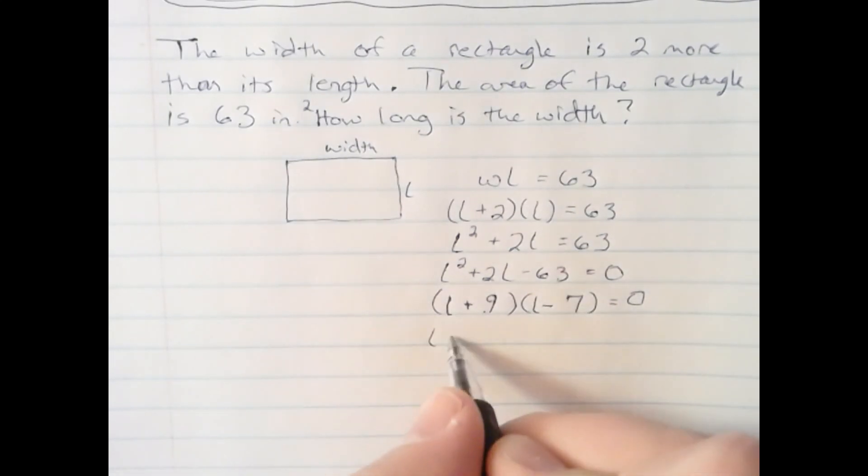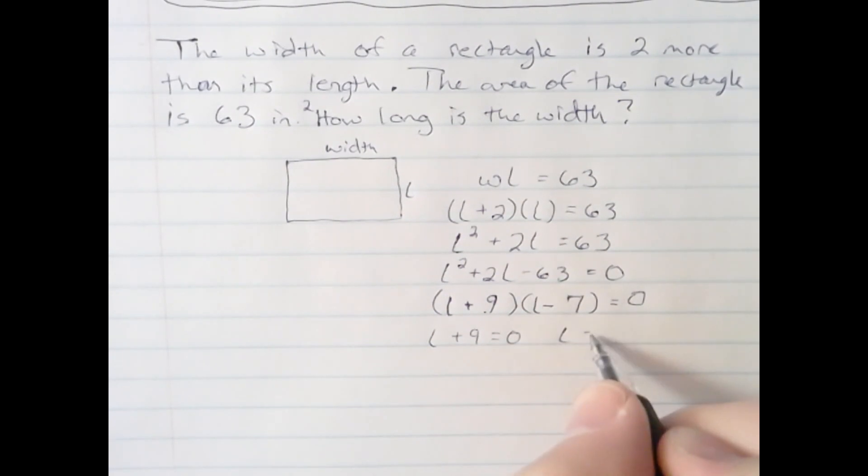I now need to solve each of these equations by setting them equal to 0 and solving for L. This one, L has to be negative 9. This one, L has to be 7.